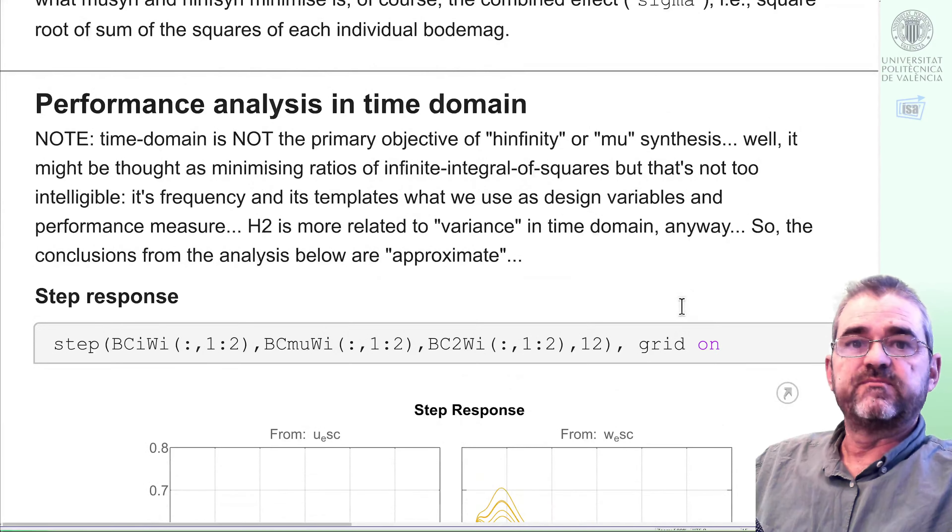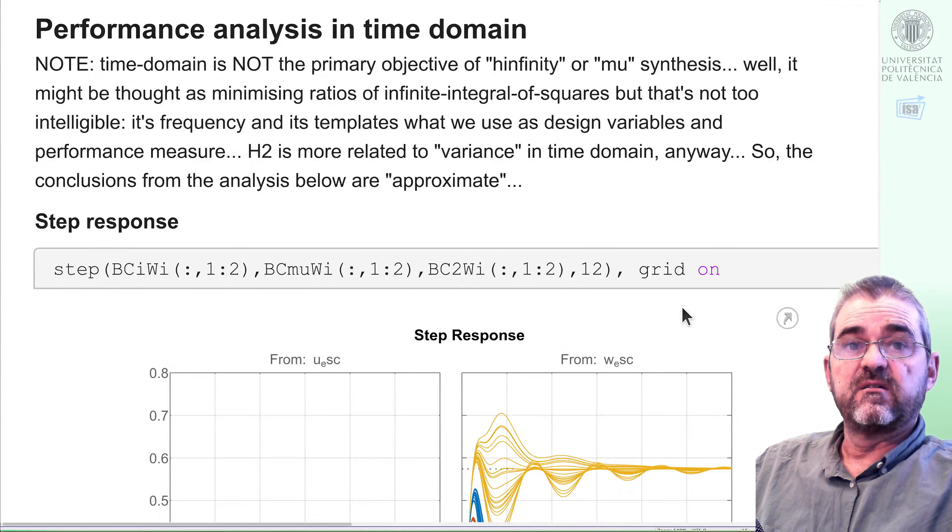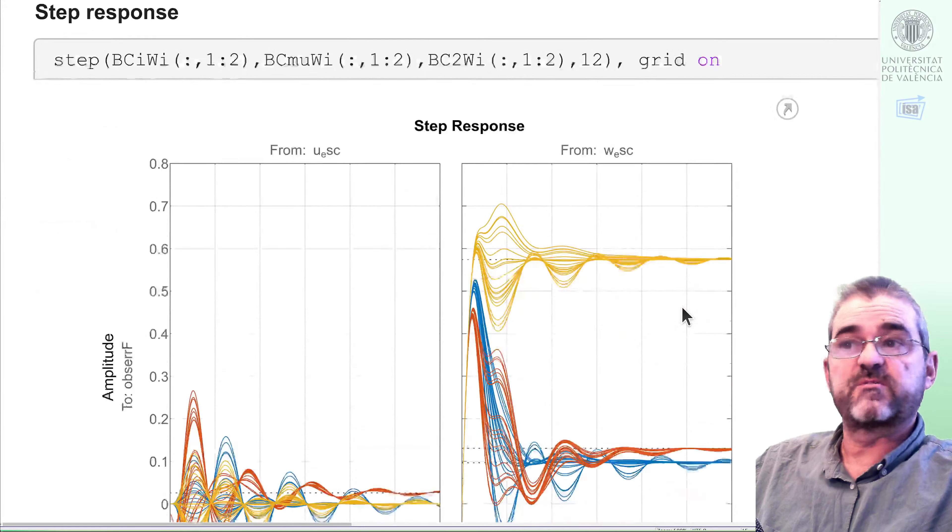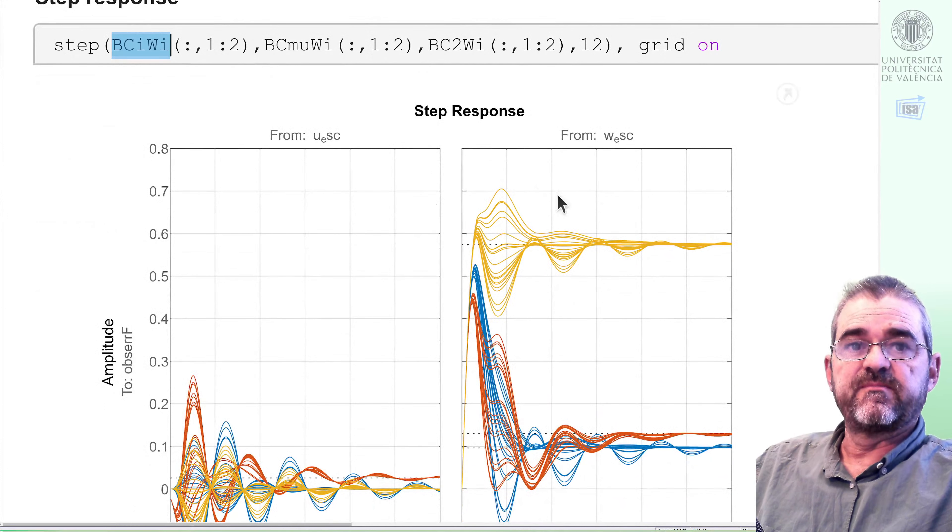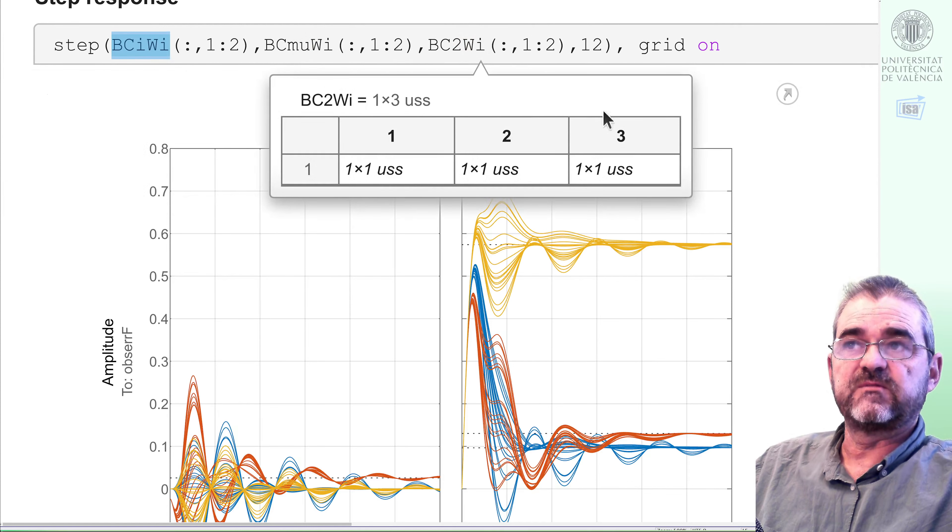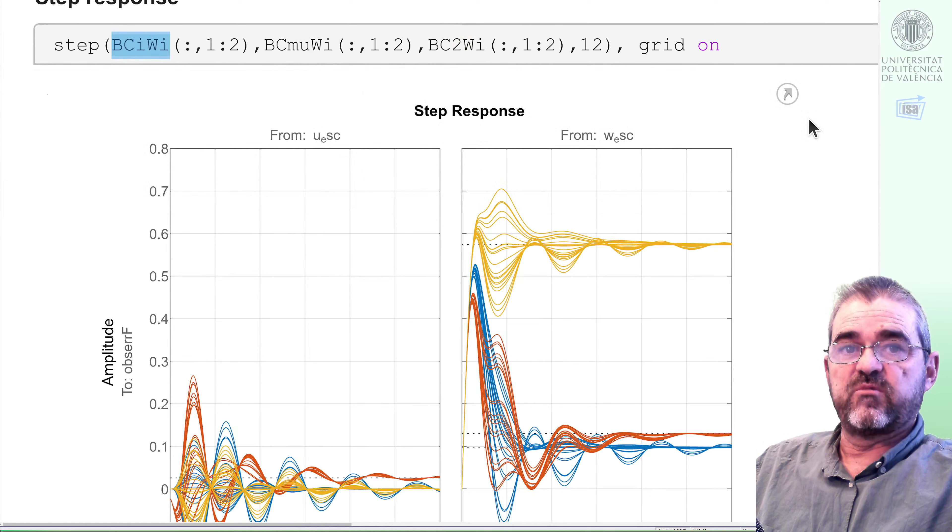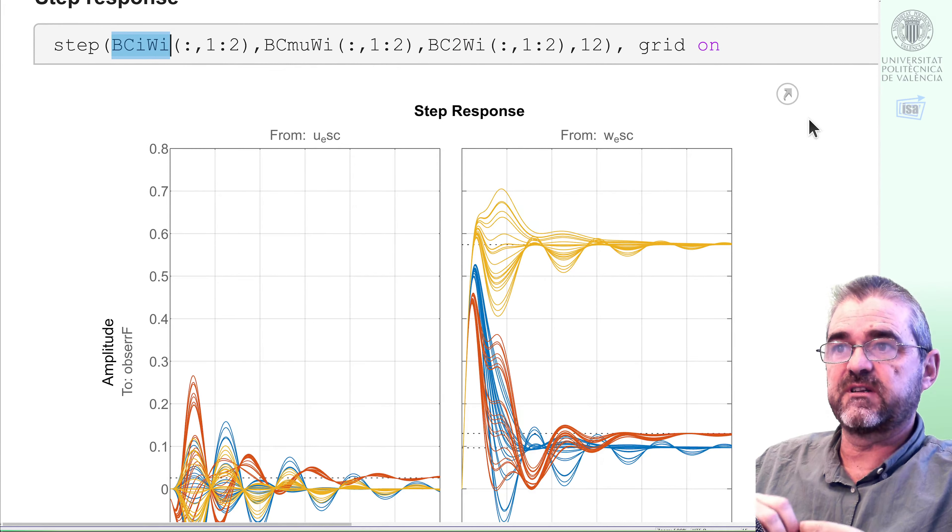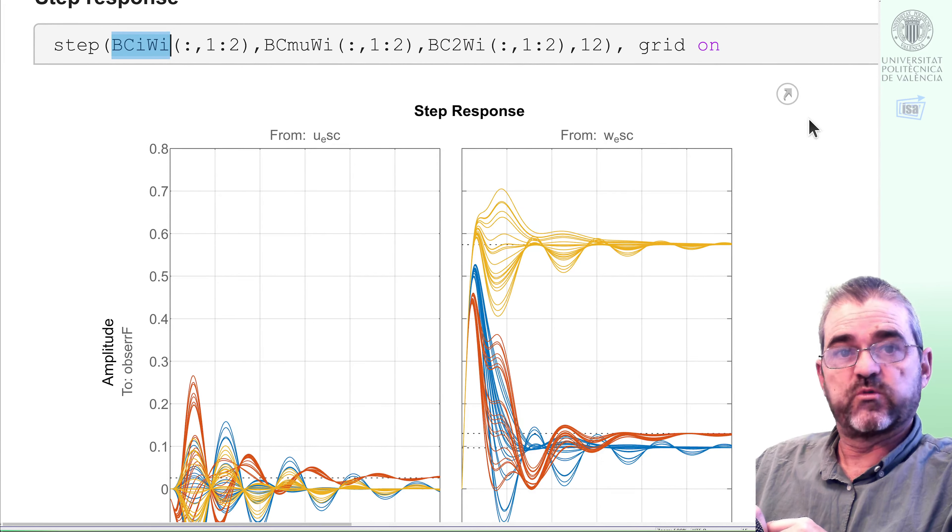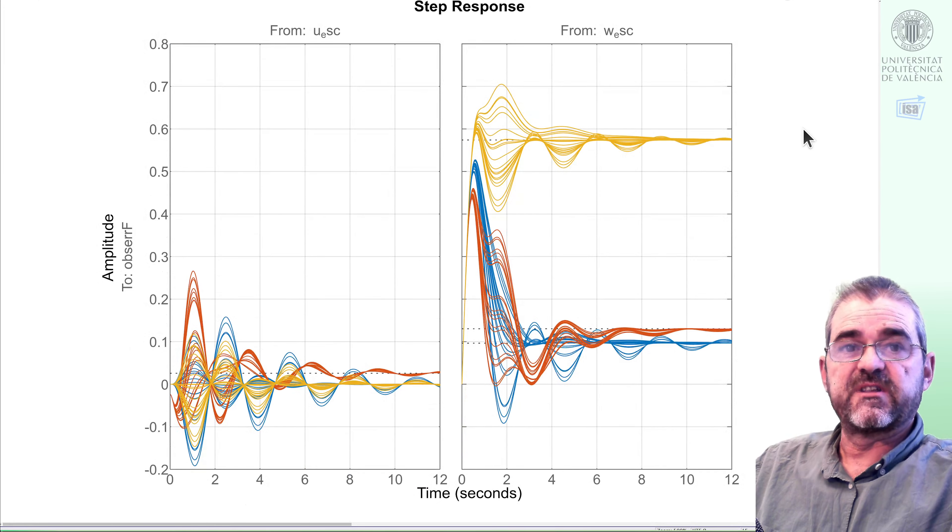So let's go with a performance analysis in time domain. First, we'll see the step response. We computed this, OOI is H infinity, mu is synthesis, 2 is H2, and WI indicates that inputs are scaled so they have size 1, and then the input weight transforms to the peak amplitude in physical units, but we did not put output weights to see also output in physical units.